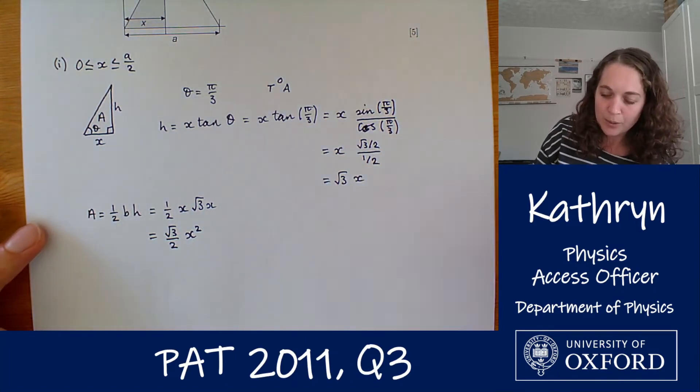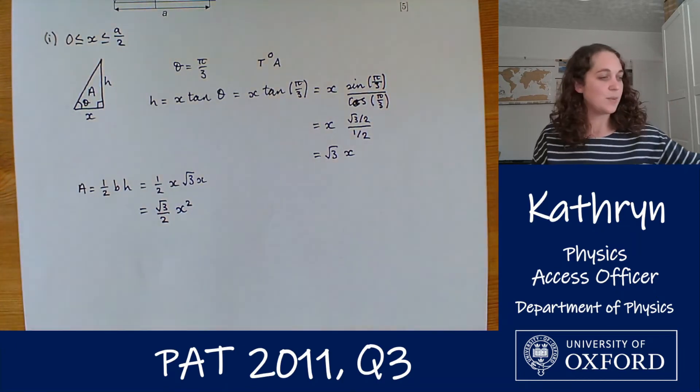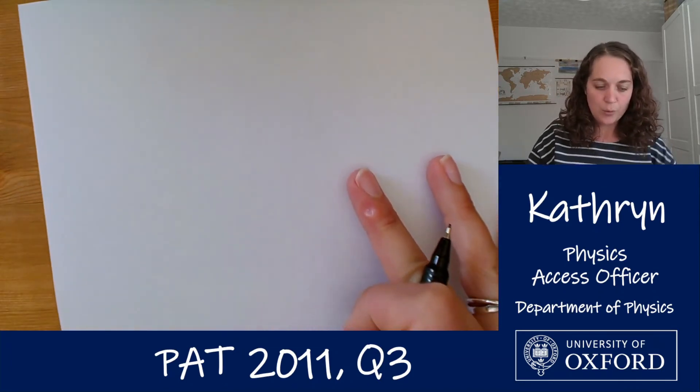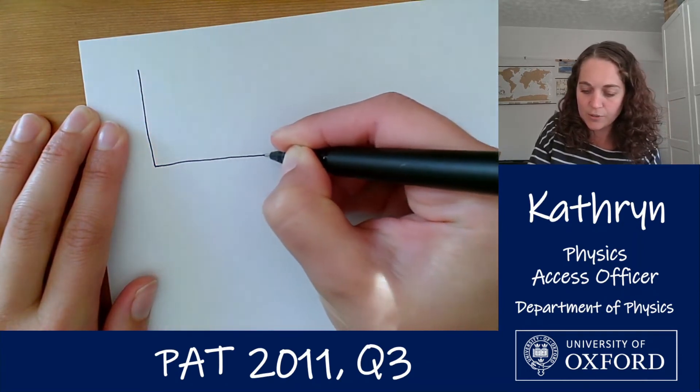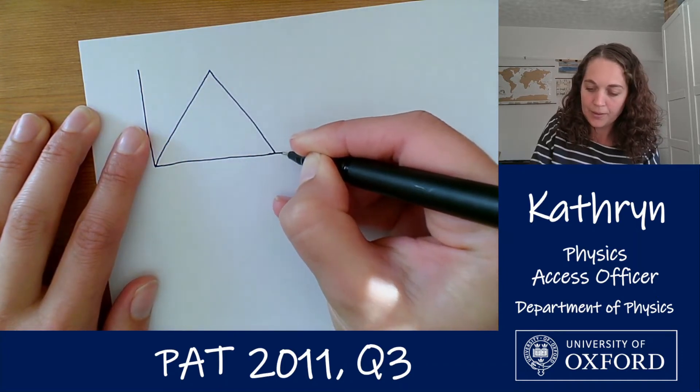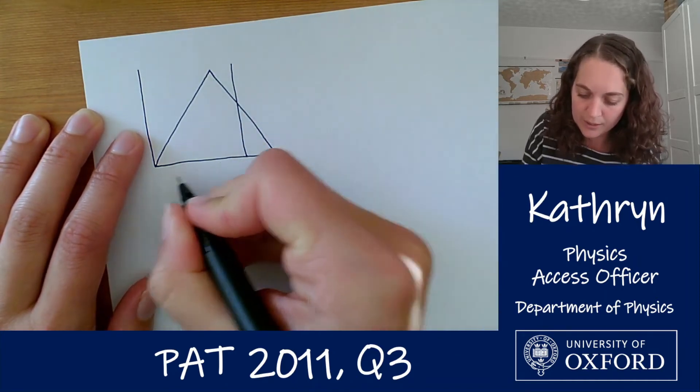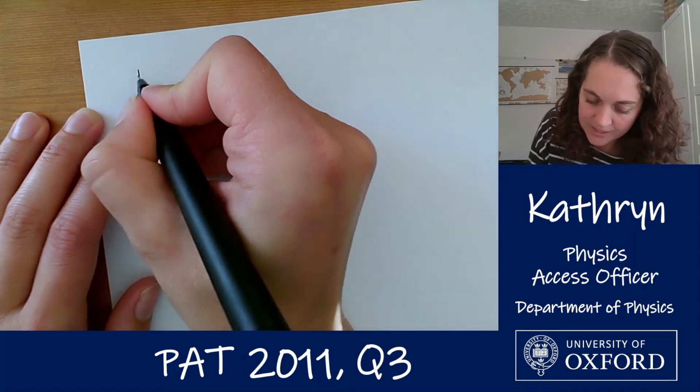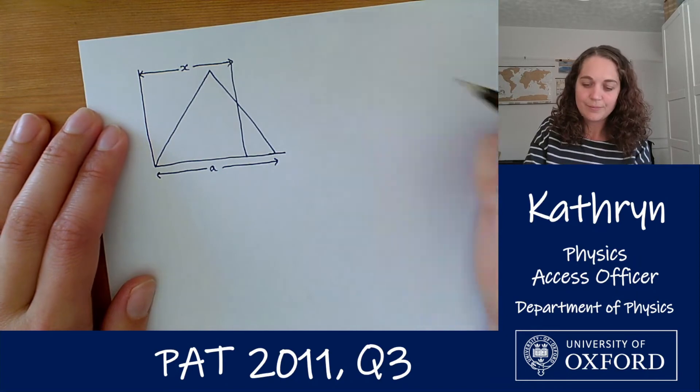Part two looks a little bit trickier because we seem to be working with a slightly funny shape. I'm going to get a new piece of paper so that we've got plenty of space for this. All right so let's redraw our diagram. We've got our vertical axis, our horizontal axis, and we've got our equilateral triangle. We've got our length x which this time is beyond our halfway point. So this distance here is a, this distance here to our line is x.